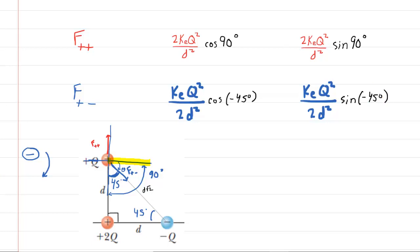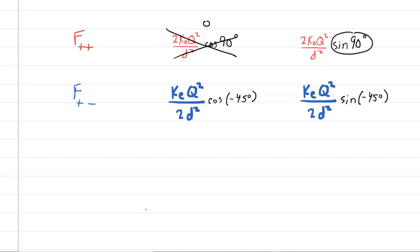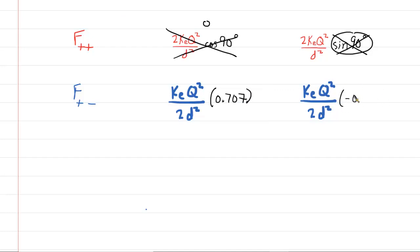Once those angles are entered, we can simplify. The cosine of 90° is 0, so the x component of F(positive, positive) is 0. The sine of 90° is 1, so the y component is just the magnitude 2k_e Q²/d². The cosine of -45° is √2/2, or about 0.707. The sine of -45° is -√2/2, or about -0.707.